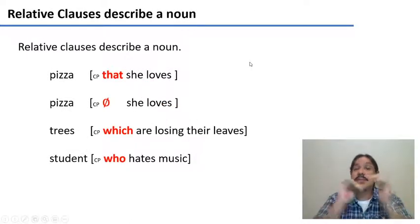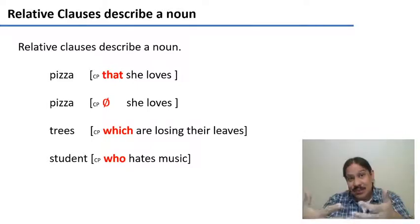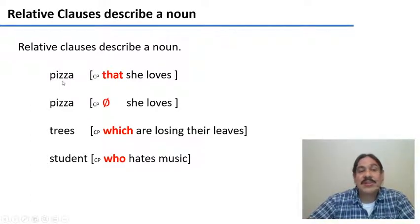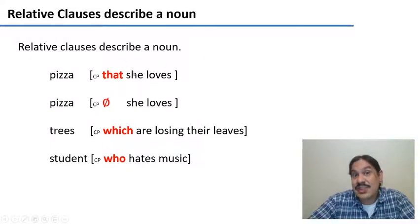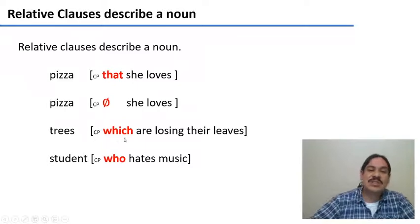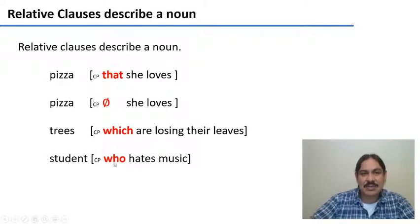Subordinate clauses describe the verb. Finally, we have relative clauses. These serve to describe nouns — they function like adjectives. So we can have a phrase like 'pizza that she loves,' and this whole phrase describes the pizza; this is what kind of pizza it is: the one that she loves. You can have zero relativizers in English — you can say 'pizza she loves' — or you can have 'trees which are losing their leaves' and 'a student who hates music.' These relativizers — that, which, who — are the head of the complement phrase functioning as a relative clause, describing a noun.